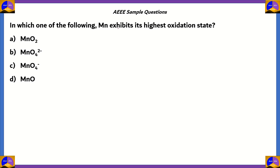Let's look at the final question of this episode. In which one of the following, manganese exhibits its highest oxidation state? Now remember, manganese is a transition element, so it's present in the D block of the periodic table. That means it has a range of oxidation states. Let's look at each of the options given.